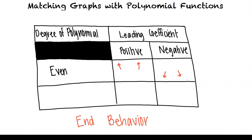If the degree of the polynomial is odd, the ends of the graph will point in opposite directions. If the leading coefficient is positive, the left end will point down and the right end will point up. If the leading coefficient is negative, the left end will point up and the right end will point down.